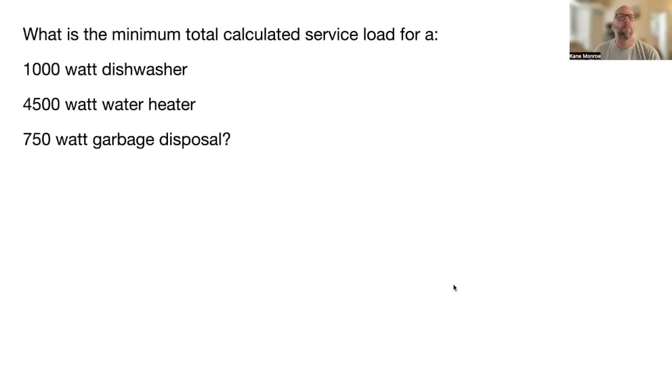What is the minimum total calculated service load for a 1000 watt dishwasher, a 4500 watt water heater, and a 750 watt garbage disposal? Remember, it's less than four or less, so we don't have to multiply times 0.75. We add those up and it comes to 6250 watts. NEC 220.53.